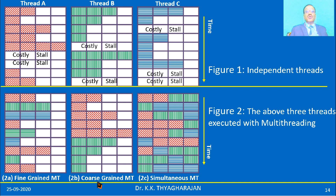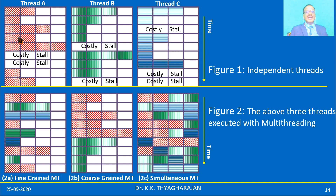In coarse-grained multithreading, all rows of a thread until it faces a stall are brought to the pipeline. Thread B has four rows, and after those four rows there is a stall, so all four rows are issued to the pipeline before switching to thread C. In thread C, a stall occurs only at the third row, so the first two rows are issued and executed. Sets of instructions are executed continuously until a costly stall occurs, at which point switching to the next thread happens.